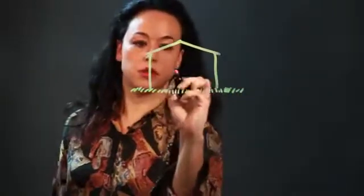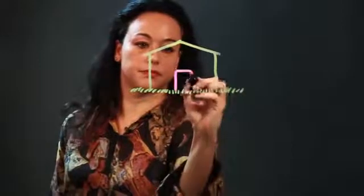And I'm going to draw a door in the center, which is just a rectangle. I'm going to put a doorknob, and then I put some windows — squares or rectangles.